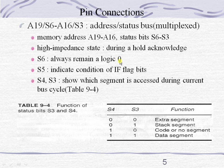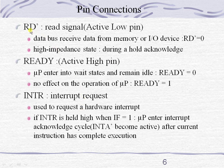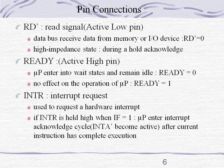The RD bar is an active low pin used by the microprocessor. Active low pins are activated when logic zero is given, and active high pins are activated when logic one is given. When this RD bar pin becomes zero, it indicates that the processor is performing a read operation with respect to a memory or input-output device.